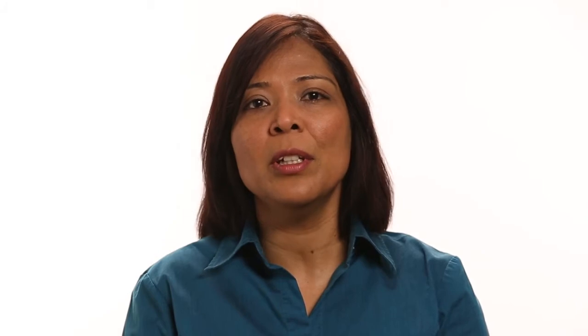In the past, DCI meant supporting data transfer, backups, and disaster recovery over low bandwidth IP-based links between data centers. But now, DCI has to transport huge volumes of data and applications and support bursts of virtual machine mobility technology — all over low bandwidth DCI links. This makes it very challenging to improve productivity through application and data availability.